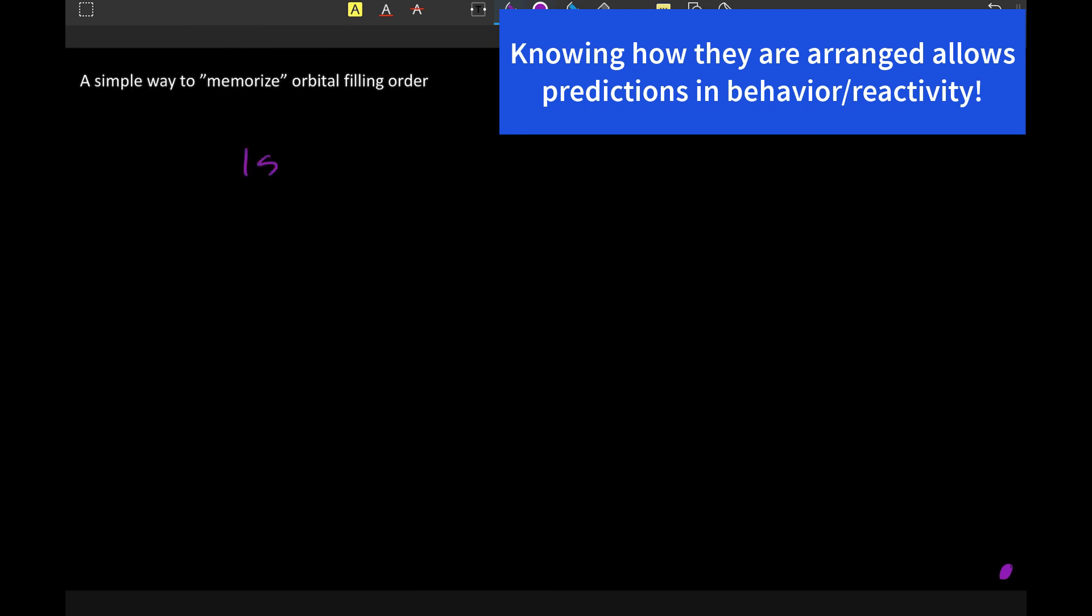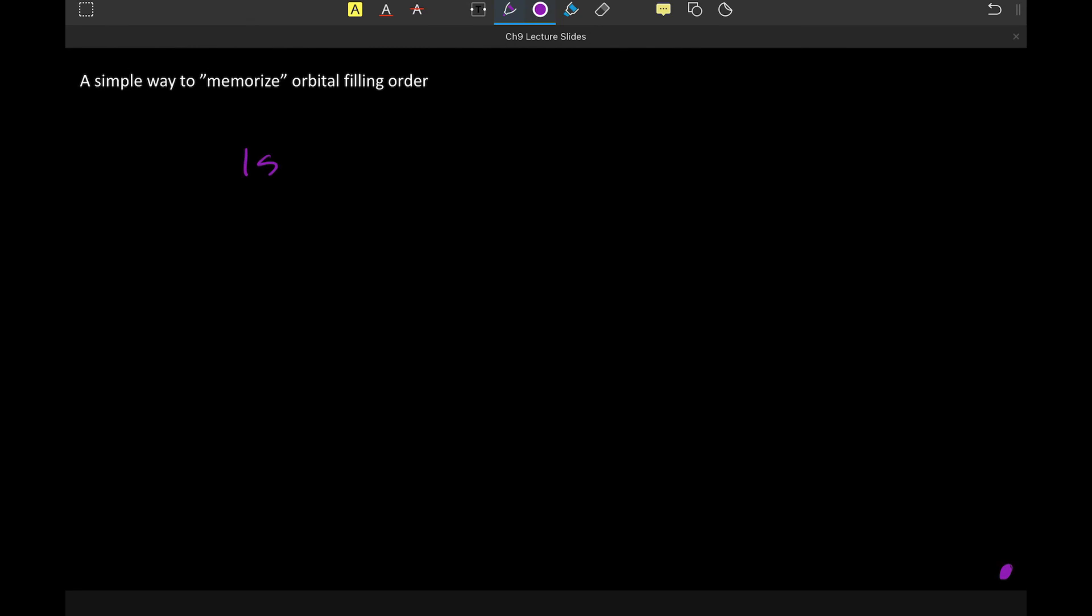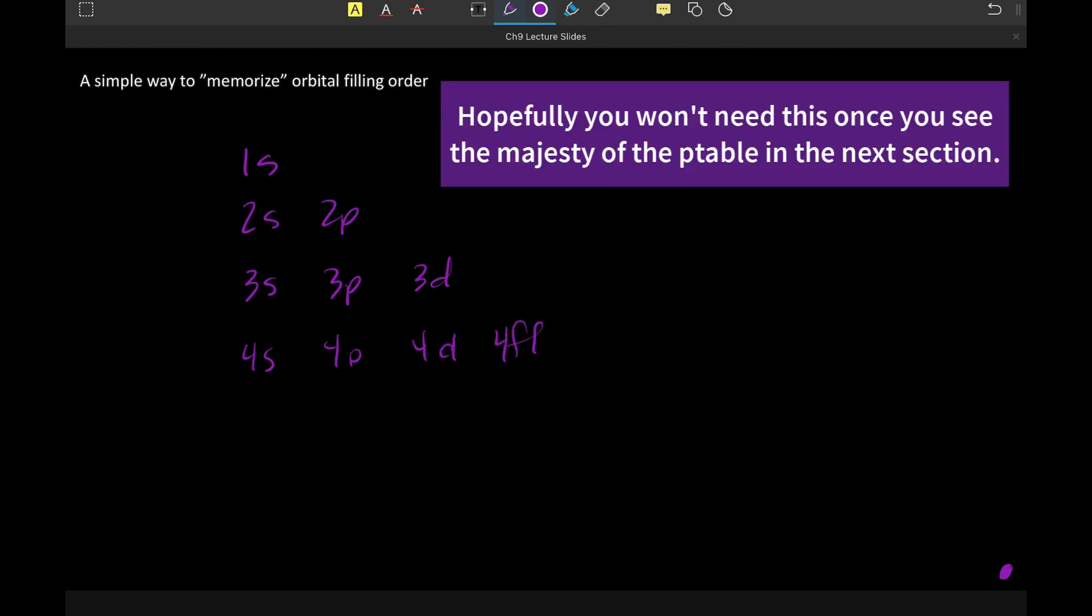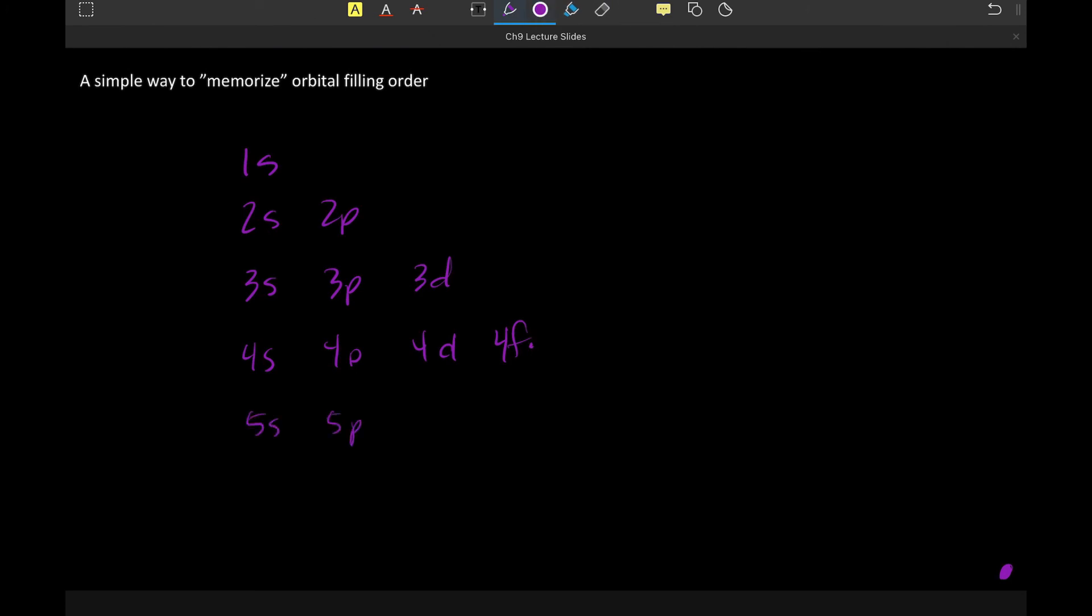Where what we would do is we write out all the shells, all the potential shells and subshells. So 1s, 2s, and then 2p, then 3s, and then 3p, and then 3d. 4s, 4p, 4d, 4f. And then we have 5s, 5p, 5d, 5f, and it could keep going to 5g, hypothetically, we just don't have a need for those yet because none of our atoms are quite that big. 6s, 6p, 6d, 6f. 7s, 7p, 7d, and 7f.